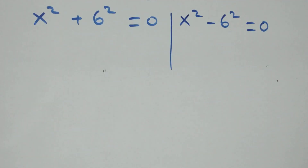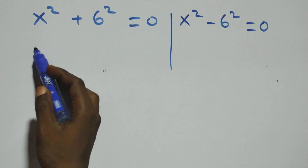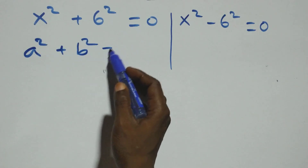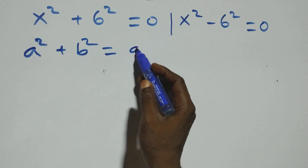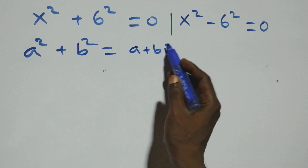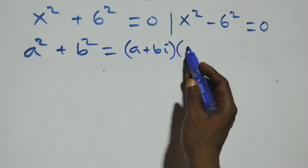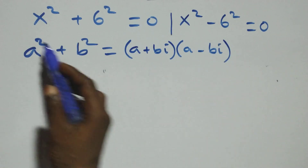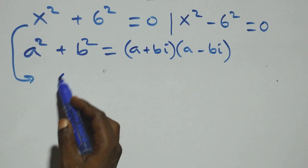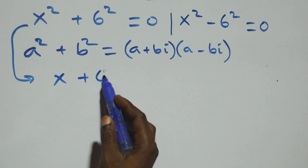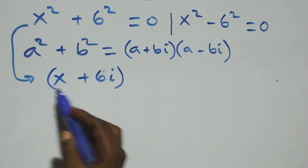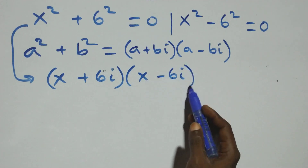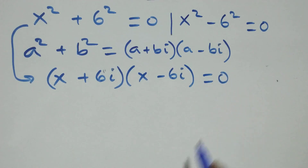Solving the first case: this follows from the identity a squared plus b squared, which is the same as (a + bi)(a − bi). So x squared plus 6 squared becomes (x + 6i)(x − 6i) equals 0.